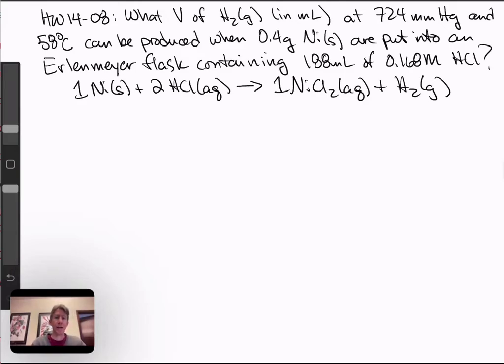What volume of hydrogen gas in milliliters at 724 millimeters of mercury and 58 degrees C can be produced when 0.4 grams of nickel solid are put into an Erlenmeyer flask containing 188 milliliters of 0.168 molarity HCl?